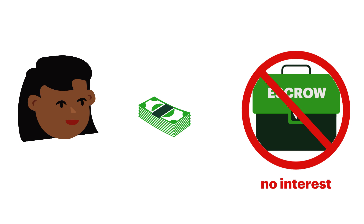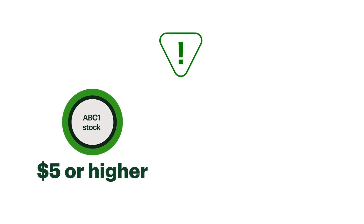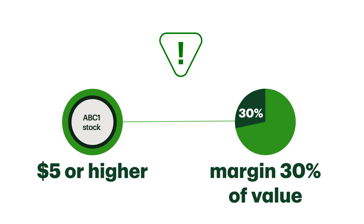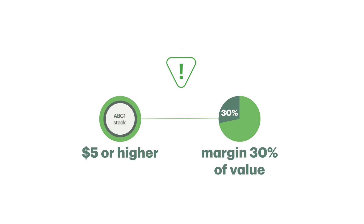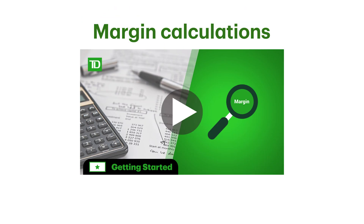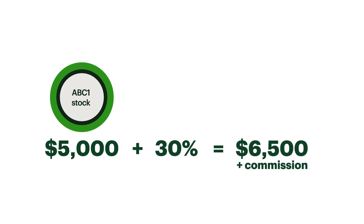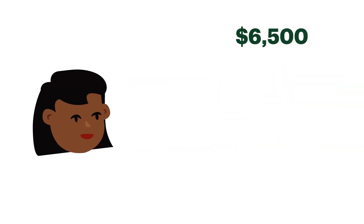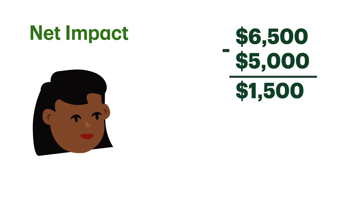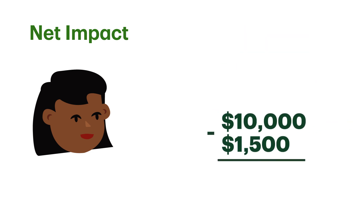You also wouldn't earn any interest on this cash. Even still, you need to put up some of your own capital as collateral as well. For most stocks that trade over five dollars, the margin requirement is typically thirty percent of the value. So the margin required for the trade is five thousand dollars plus an additional thirty percent of the trade value, which equals sixty-five hundred dollars plus commission. Since you receive five thousand dollars from the sale, the net impact to your available margin would be a decrease of fifteen hundred dollars.